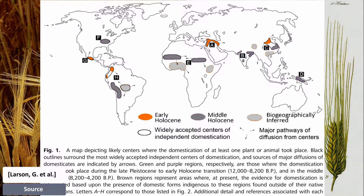Dogs were a significant exception and were certainly domesticated in the late Pleistocene before the establishment of agriculture. In the New World, crop domestication occurred thousands of years before animal domestication, whereas the opposite was true in areas such as Africa, Arabia, and India.